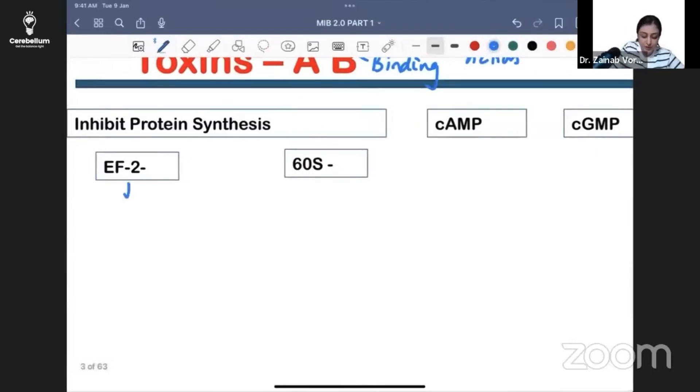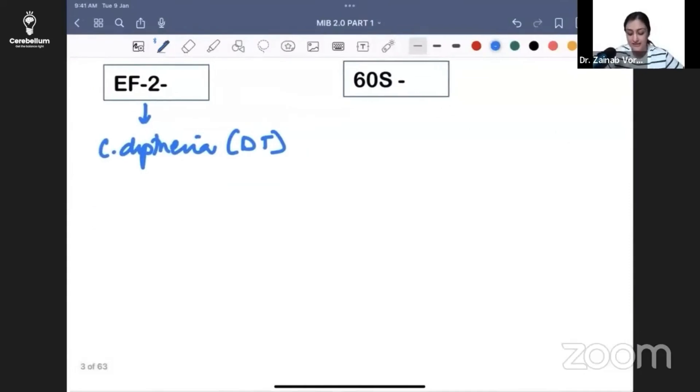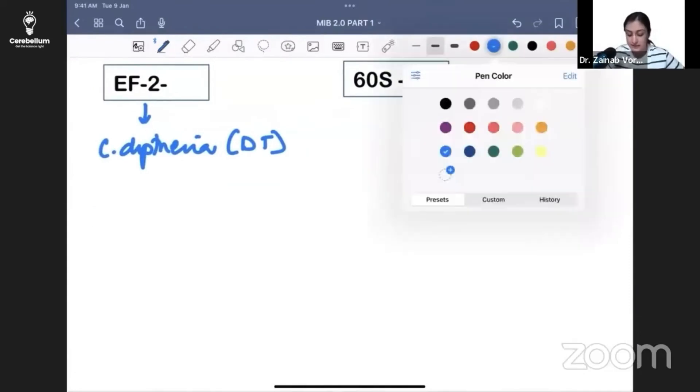What is the main toxin that inhibits elongation factor-2? This is Corynebacterium diphtheriae, which produces diphtheria toxin. The mechanism is by ADP ribosylation - it inhibits elongation factor-2 by ADP ribosylation. That is a common mechanism, and this is one repeat question.